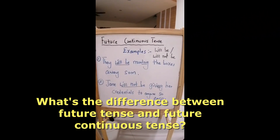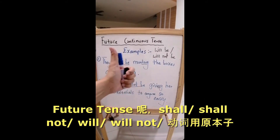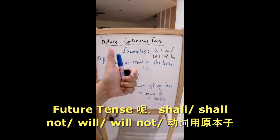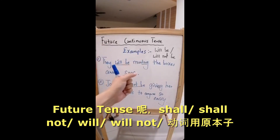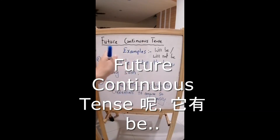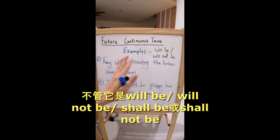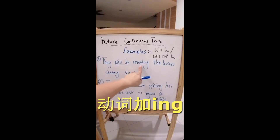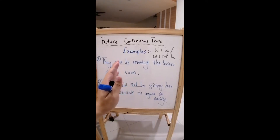For boys and girls, you have to understand the difference between future tense and future continuous tense. Future tense: shall, shall not, will, will not — 动词原本字. Future continuous tense 有 'be' — 不管是 'shall be', 'shall not be', 'will be' 或 'will not be' — 动词是加 ING. 并且它比较着重在特定的时间. It's in a more specific time. Thank you.